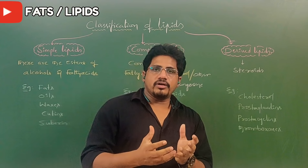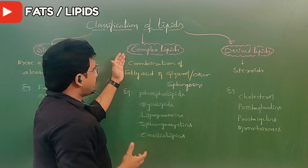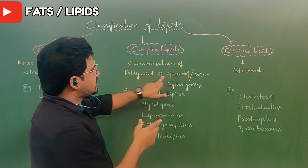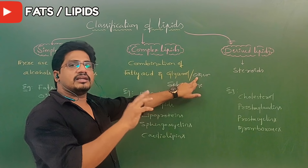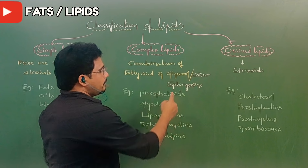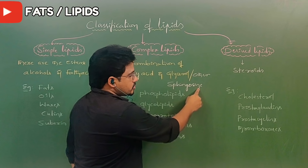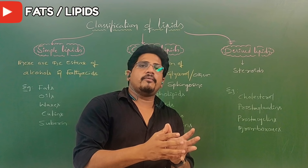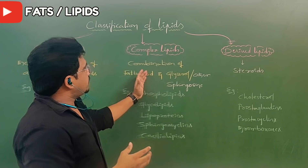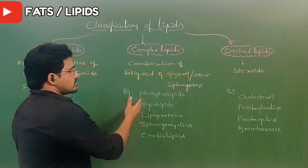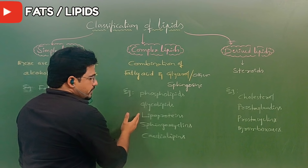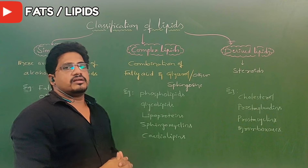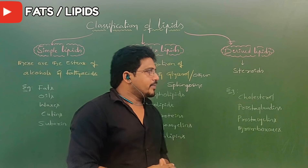When we go to the second category in lipid classification, there are complex lipids, also called compound lipids. In compound lipids we can see combinations of fatty acids along with glycerol or other than glycerol, any alcoholic group — mainly sphingosine. Sphingosine is an alcoholic group component present only in complex lipids.